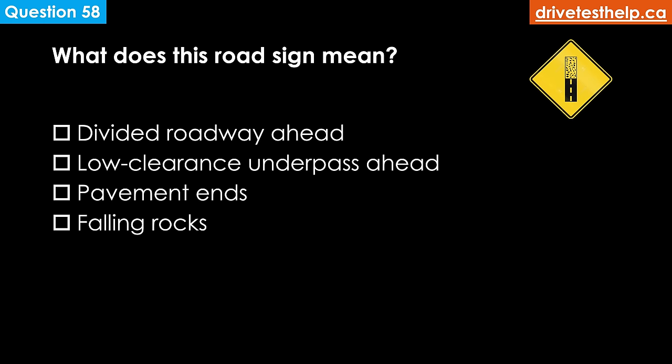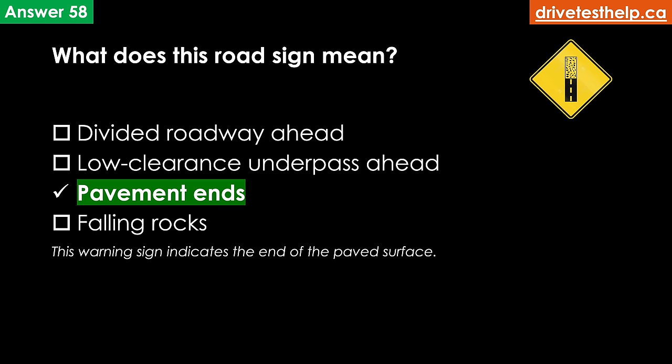What does this road sign mean? Options: divided roadway ahead; low clearance underpass ahead; pavement ends; falling rocks. The correct answer is pavement ends. This warning sign indicates the end of the paved surface.